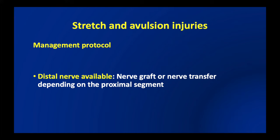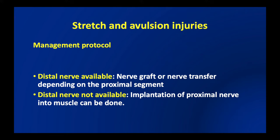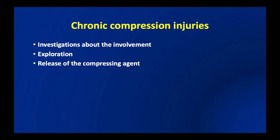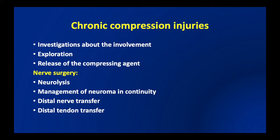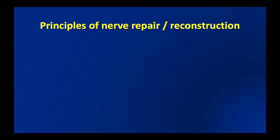Management also depends on the availability of the distal nerve segment. If the distal segment is available, nerve grafting or nerve transfer can be done depending on the proximal segment availability. If the distal segment is not available, implantation of the proximal nerve or nerve graft into the muscle needs to be done to achieve good function. In case of chronic compression injuries as seen in entrapment neuropathies, exploration and release of the compressing agent — fibrous tissue or bone — should be done first, followed by neurolysis, management of neuroma in continuity, or distal nerve or tendon transfer.